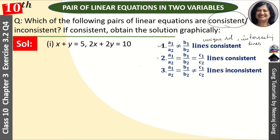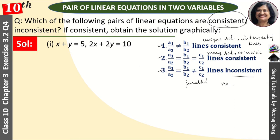Then, if a1 upon a2 is equal to b1 upon b2 but not equal to c1 upon c2, then the lines are inconsistent — meaning the lines are parallel and there is no solution.